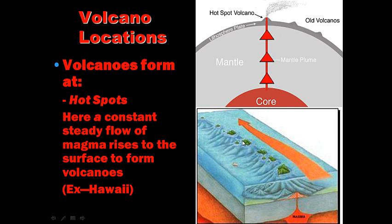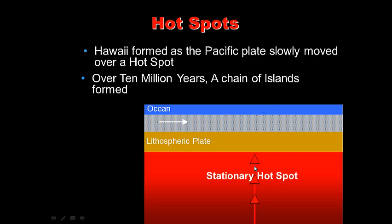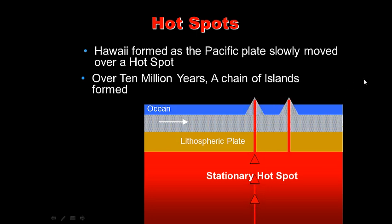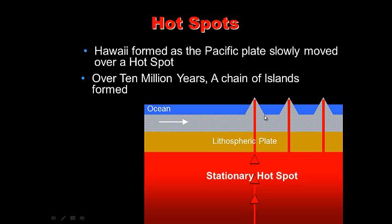Moving away from the Big Island, Maui, Oahu, and Kauai are progressively older and are no longer over the hot spot — they are shrinking and no longer active. The hot spot does not move; the plate does. The Big Island is still over the hot spot and is still erupting today.